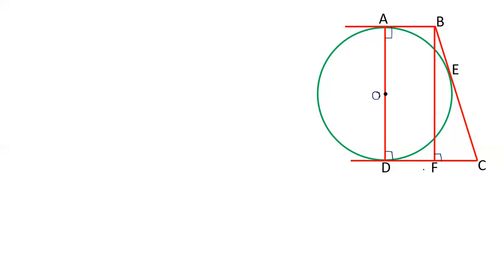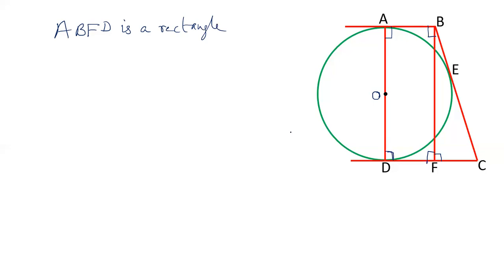BF is drawn perpendicular to CD, so ABFD is a rectangle. The angles are all 90 degrees, confirming it is a rectangle. Since opposite sides of a rectangle are equal, AB is given as 3, so DF is also 3. CD is 12 centimeters, so CF will become 9 centimeters.